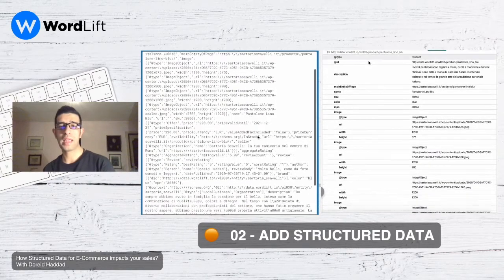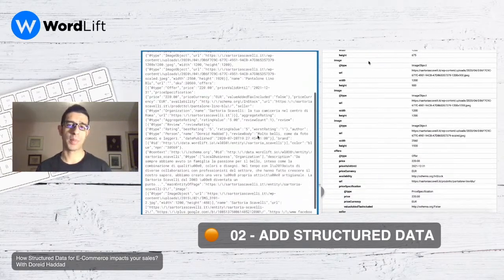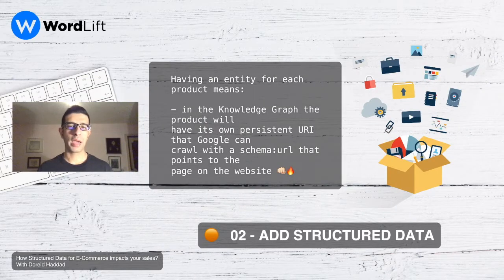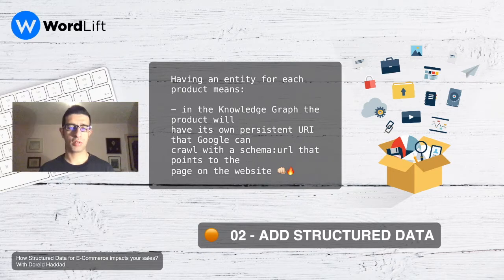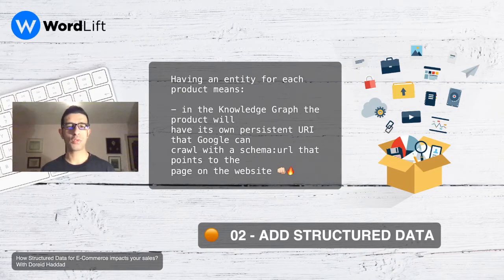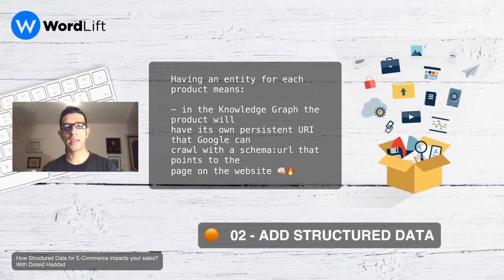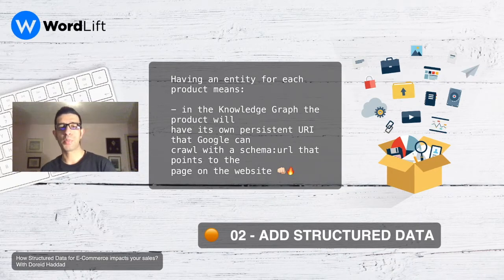You can ask me: why do I need this technology in order to produce the structured data? You could be a developer and produce the JSON-LD yourself. Someone asked me on Facebook recently — they had a plugin that produced the structural data for them and wanted to know why they'd need this technology. The answer is simple: because we are not only building the structured data, but we are combining the structured data with the entity itself. Having an entity for each product means that in the knowledge graph the product will have its own URI.